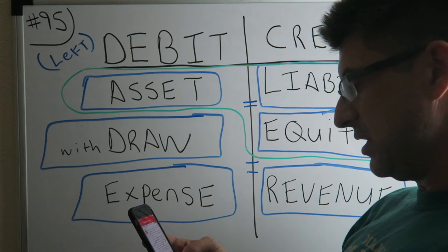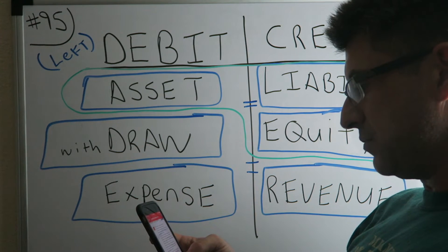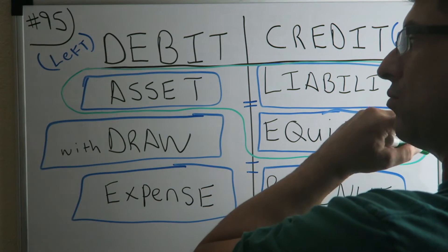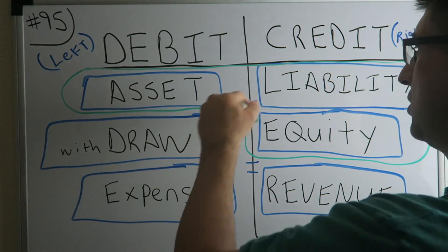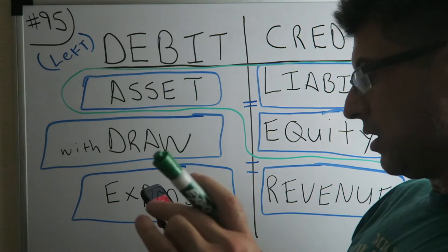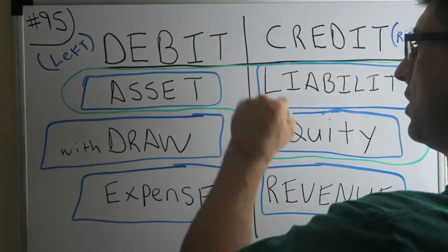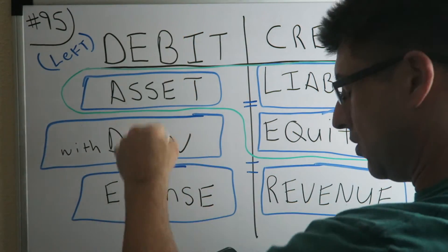Number five, it tells us the opposite of the above: DEA are decreased by credits. Right, if asset, withdrawal, or expense are decreasing, you credit it. If liability, equity, and revenue are debits, they're going down.